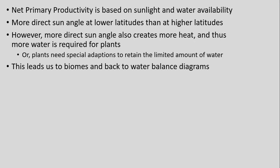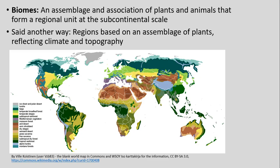Water availability really drives NPP, and as we look at biomes, it ties us to those water balance diagrams — plants needing special adaptations in areas of limited water. That brings us to biomes, which we can define as an assemblage or association of plants and animals forming a regional unit at the subcontinental scale. Said another way, these are regions of similar plants essentially reflecting the climate and topography of that area.